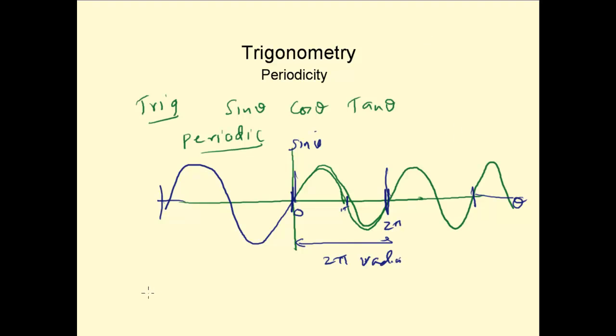Therefore, the period of sin θ is equal to 2π radians or 360 degrees. Also note that sin of θ plus 2π equals sin θ.